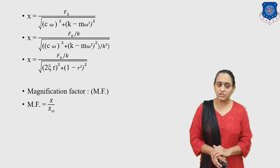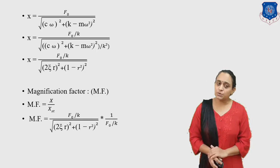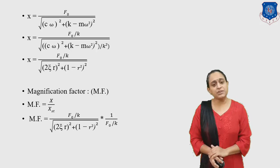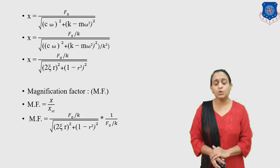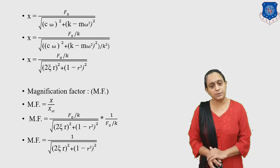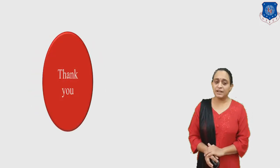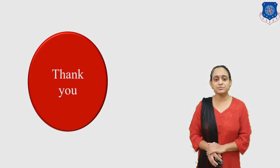The magnification factor is the ratio of amplitude to static amplitude, where static amplitude = F0/K. So the magnification factor = (F0/K) / √[(2ζR)² + (1 − R²)²] × (K/F0) = 1 / √[(2ζR)² + (1 − R²)²]. This completes forced damped vibration using both graphical and analytical methods. Thank you.